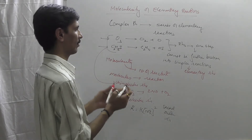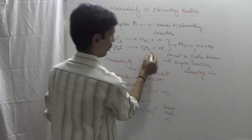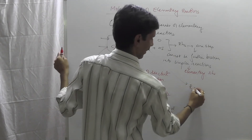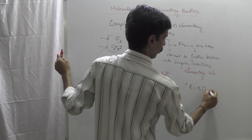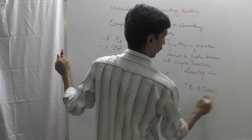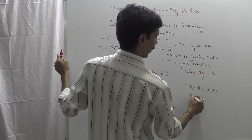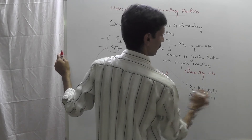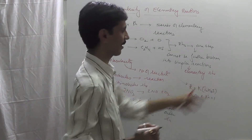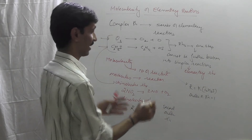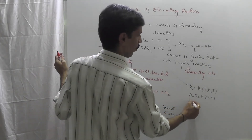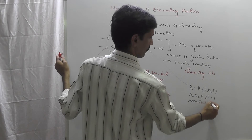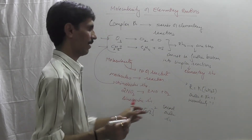Similarly, for the C2H5I reaction, the rate law expression says R is equal to K into [C2H5I]. So the order of reaction is 1. From the rate law expression, the order of reaction is 1, and the molecularity is also 1.